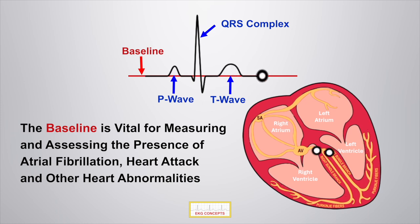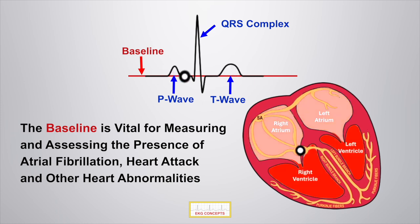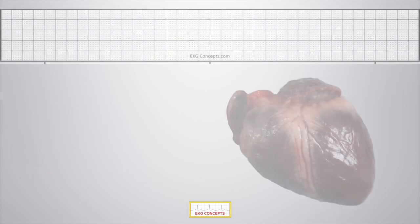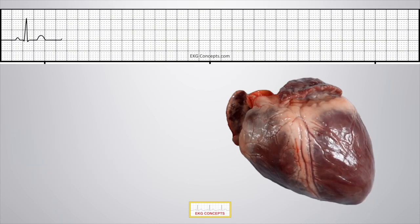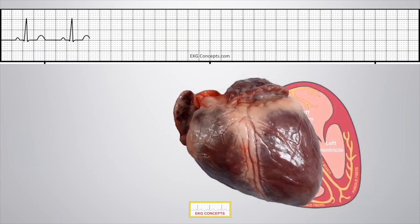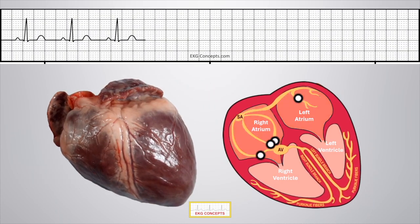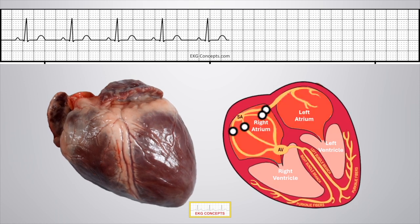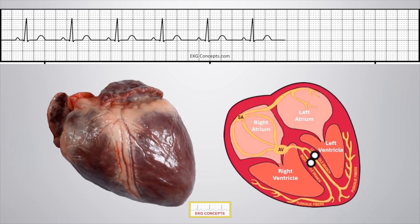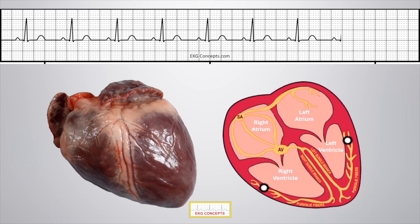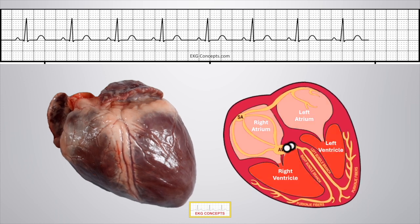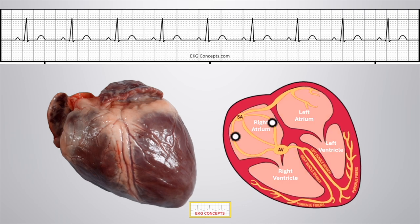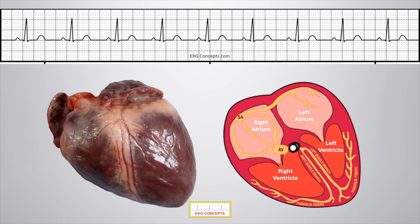Together, the P wave, QRS, and T wave represent one heartbeat. While we can't see the mechanical contraction or the electrical pathways of the heart, we can see the EKG tracing, which shows us the heart's rate, rhythm, and whether electrical signals are traveling normally. The EKG can reveal problems like irregular heart rhythms and heart attacks.